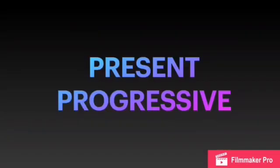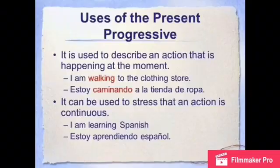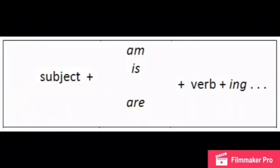Present progressive. Uses of the present progressive: to describe an action that is happening at the moment, and to stress that an action is continued. The correct form is: subject + verb 'to be' + verb + '-ing', and the complement.